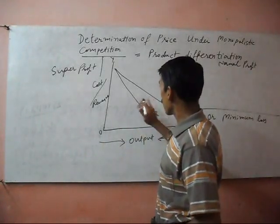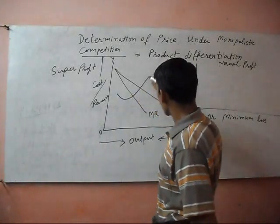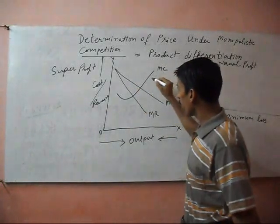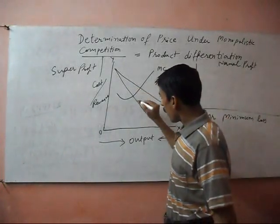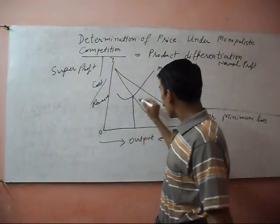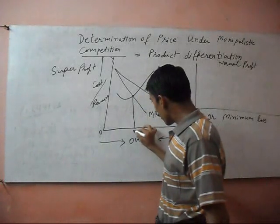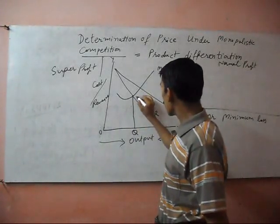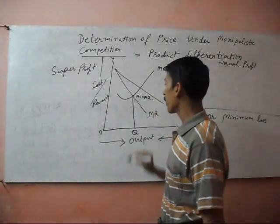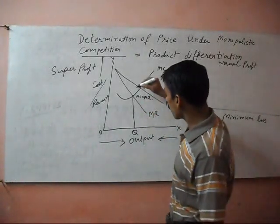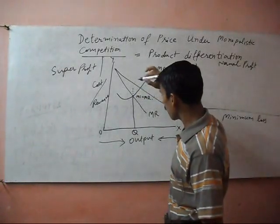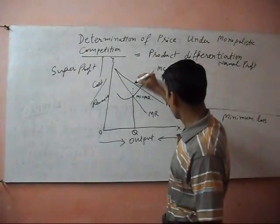And marginal cost curve will cut from below. Quantity will fix at the point where marginal cost is equal to marginal revenue. Now price will fix above this point but below the average revenue.